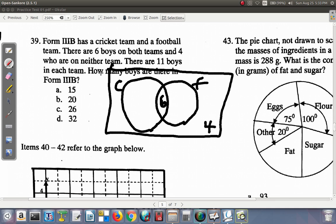There are 11 boys in each team. That means there are 11 boys in the cricket team. Six of them are also on the football team but they are on the cricket team. So six already plus some more to make the 11. Six, seven, eight, nine, ten, eleven. Six and five is 11. So there are five of them on the cricket team but not on the football team.